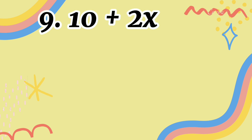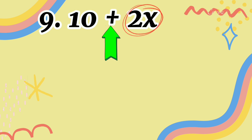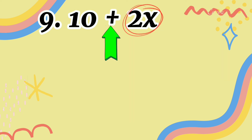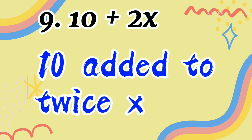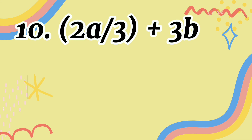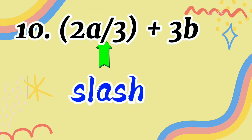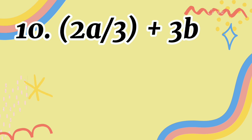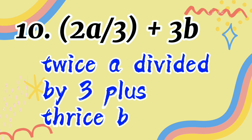Let's have number 9. In number 9, there is a plus sign and again terms written adjacently, a horizontal line, and a plus sign. So we have multiplication, division, and addition. We can translate it as: twice A divided by 3 plus thrice B.